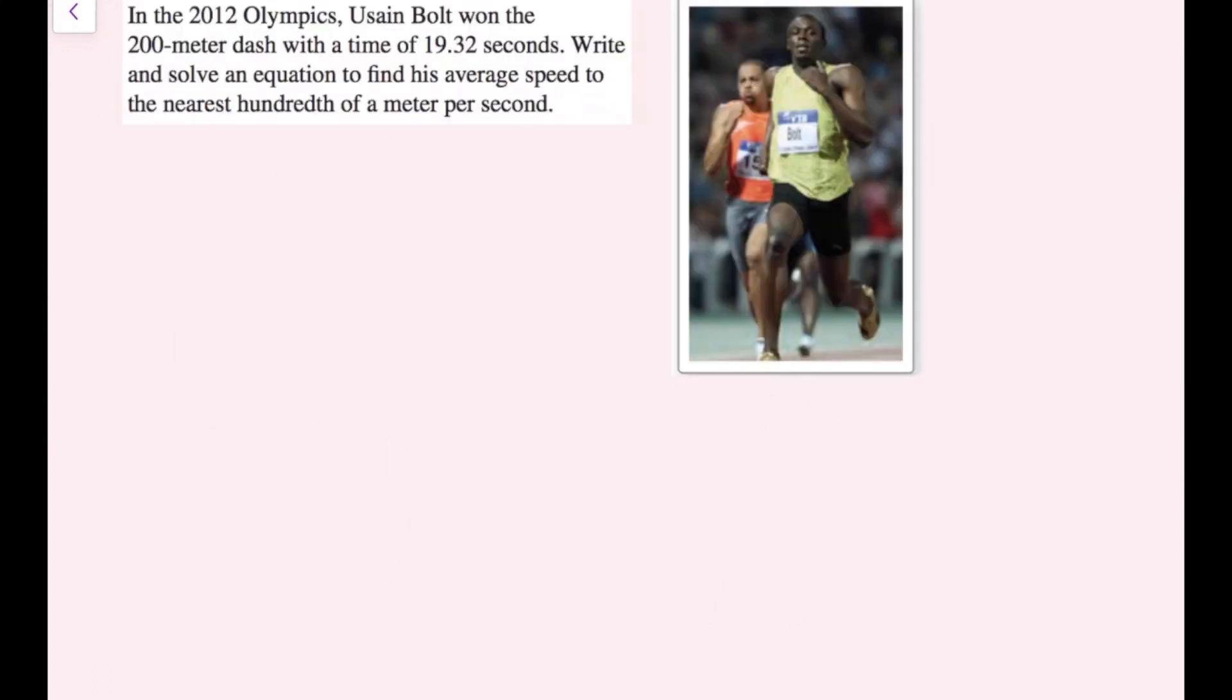For this example, in the 2012 Olympics, Usain Bolt won the 200 meter dash with a time of 19.32 seconds. Write and solve an equation to find his average speed to the nearest hundredth of a meter per second. So if you remember the formula, distance equals rate times time. His distance was 200 meters. So I can plug in 200 for D. So 200 equals rate, and then my time is 19.32.